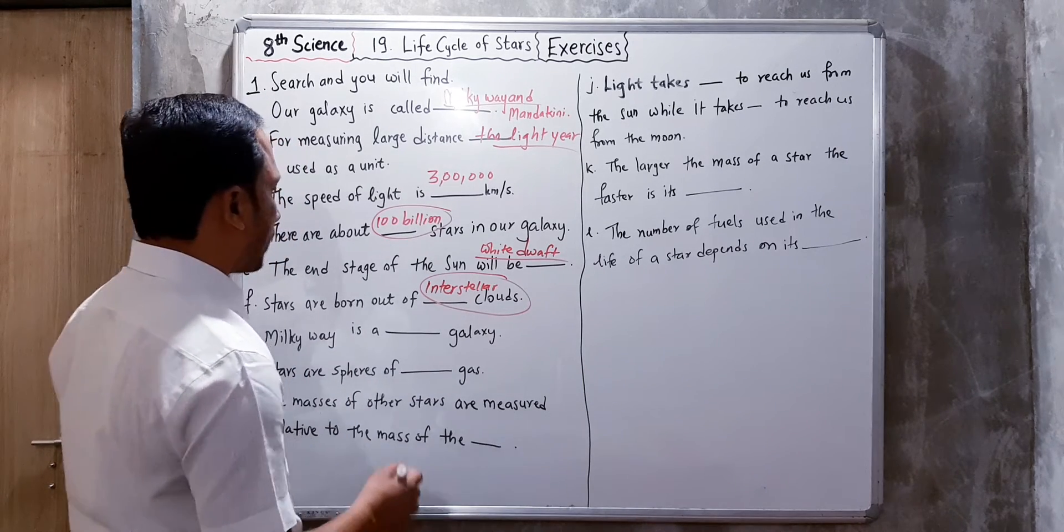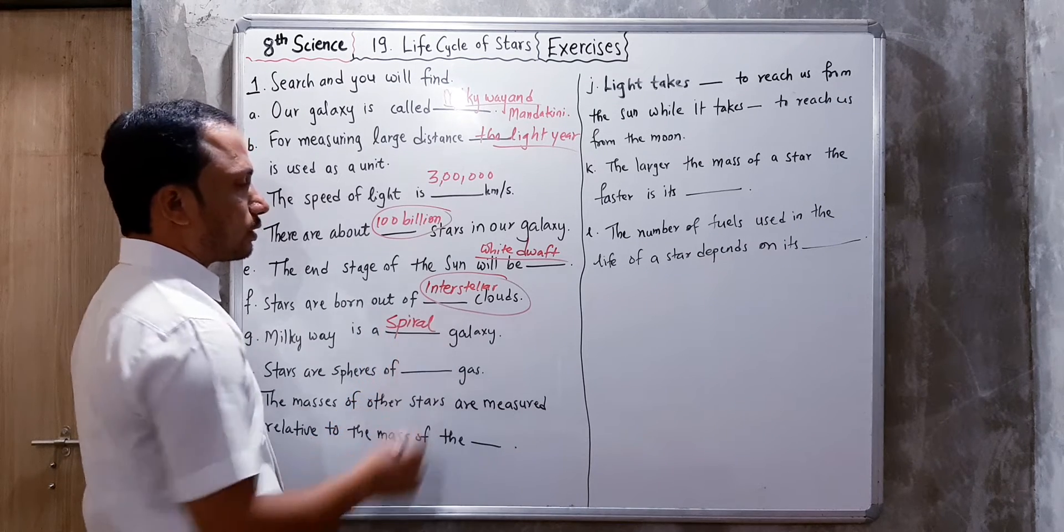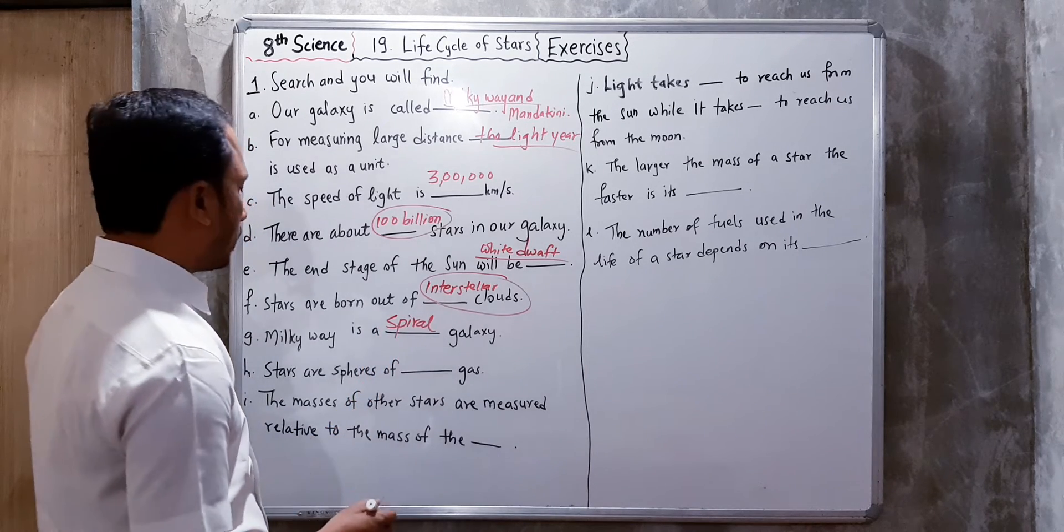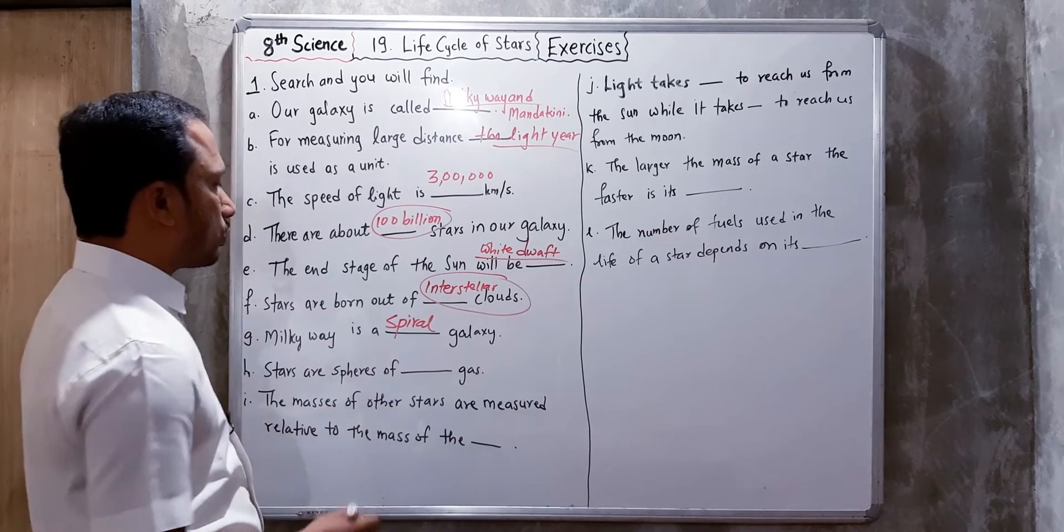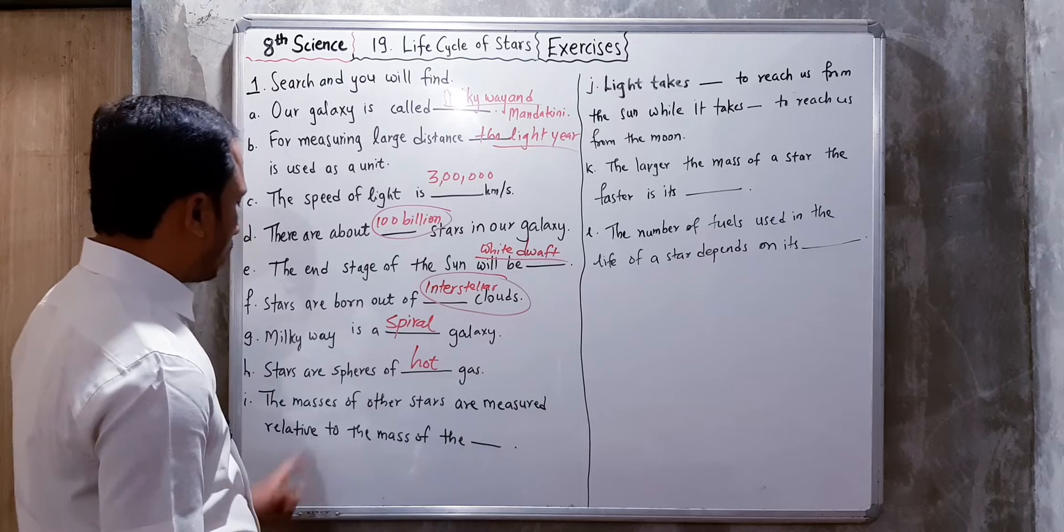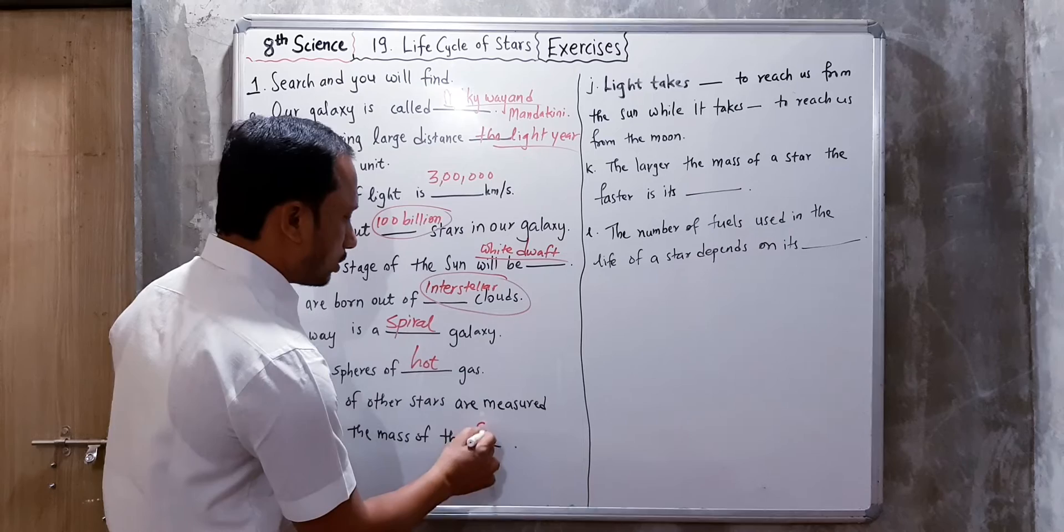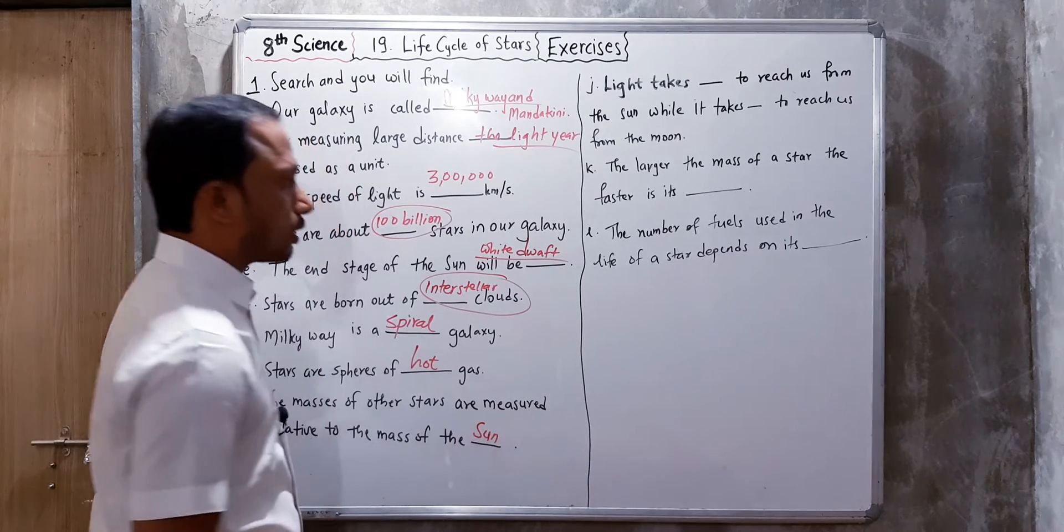Milky Way is a spiral galaxy. The stars are space of hot gas. The masses of other stars are measured relative to the mass of the Sun.